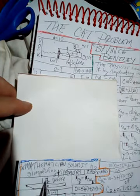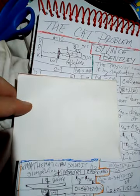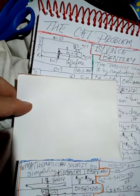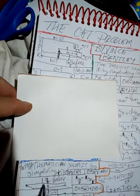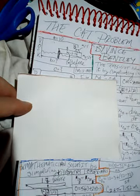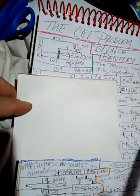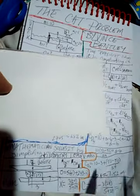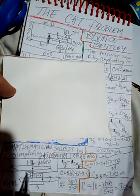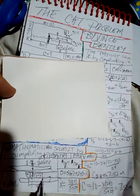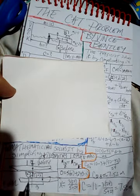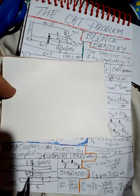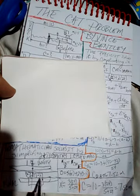He doesn't know how much the cat is going to move, so he calls it x — mathematicians love to introduce variables quickly. He says the cat moves x from the original center of mass. Since the cat moved 3 meters relative to the boat, the boat must have moved 3 minus x from the initial starting point.